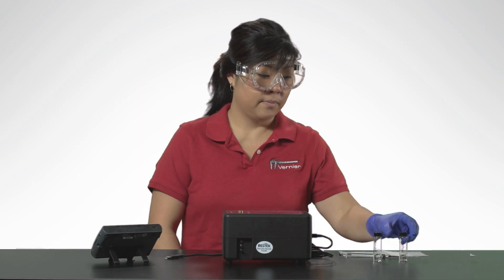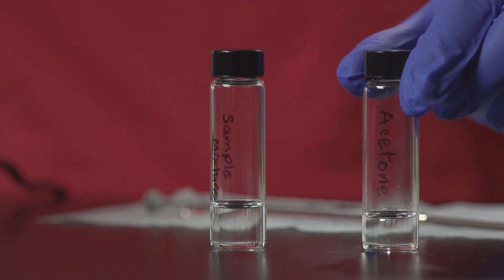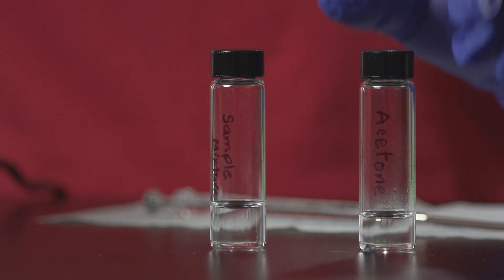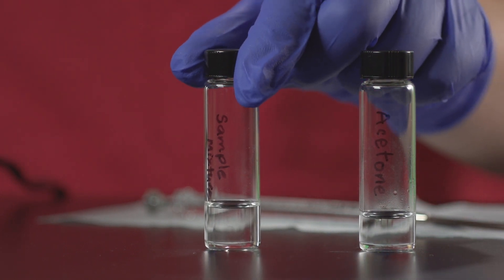A Hamilton 1 µL syringe is included with the Mini-GC Plus. This rinse vial contains acetone. The sample is a 1 to 1 mixture of ethanol and 2-butanone.